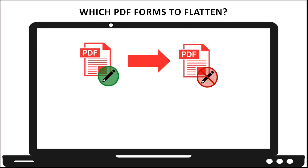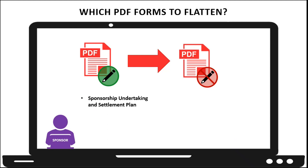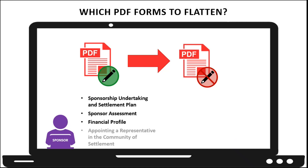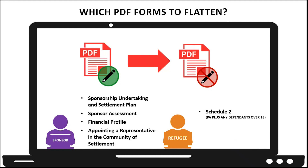Let's take a look at which PDF forms you may wish to make a flattened version for. When considering the downloaded sponsor forms, you may want to flatten the Sponsorship Undertaking and Settlement Plan, the Sponsor Assessment Form, the Financial Profile Form, or the Appointing a Representative in the Community of Settlement Form. When it comes to the Refugees forms, you may want to consider flattening the Schedule 2 Form or the Use of Representative Form.